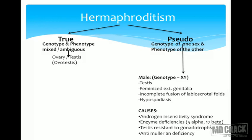Many eunuchs come from these groups. In male pseudo-hermaphrodite, the genotype is XY — Y is present so testes form — but because of some reason the external genitalia are feminized: incomplete fusion of the labioscrotal fold or hypospadias, and genitalia appear underdeveloped or female-like. The most common cause of male pseudo-hermaphrodite is androgen insensitivity syndrome, also called testicular feminizing syndrome.